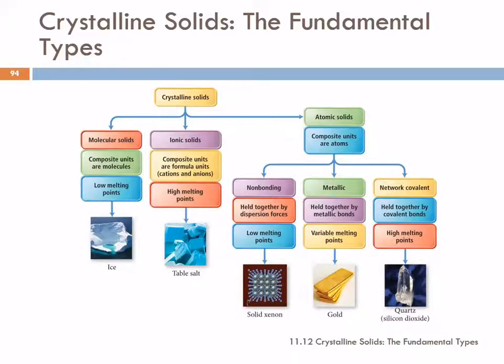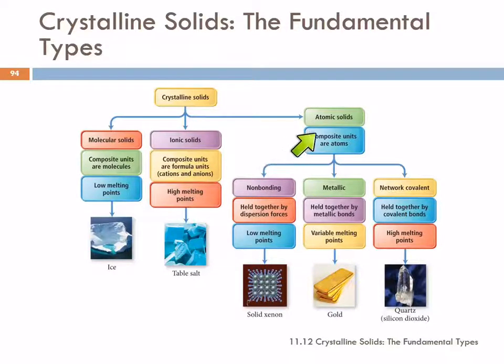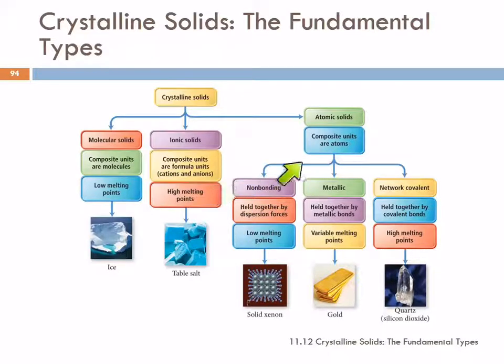If the components of the solid are atoms, then we have atomic solids. There are three different categories of atomic solids: non-bonding, metallic, and network covalent.